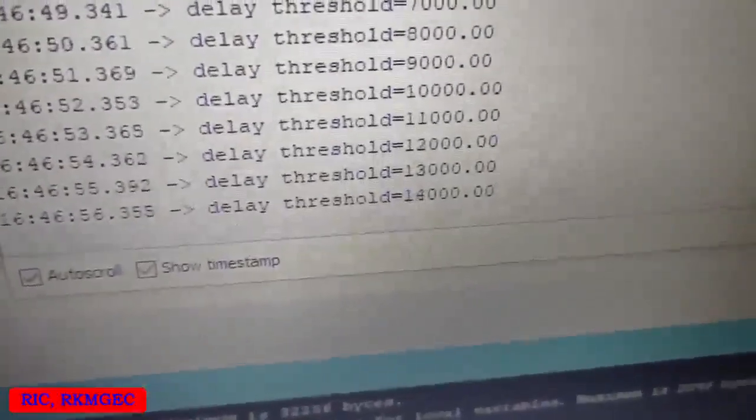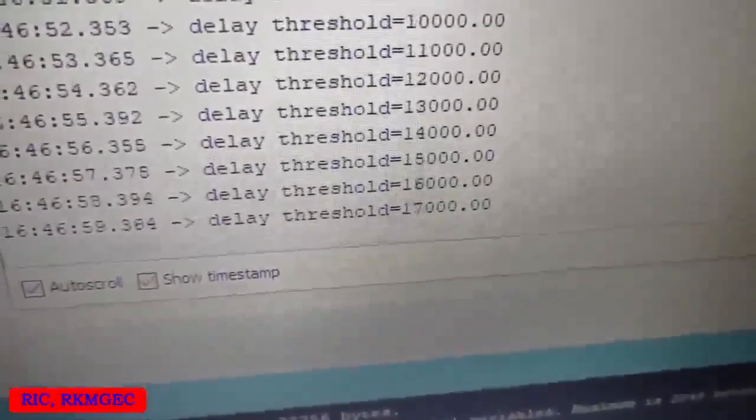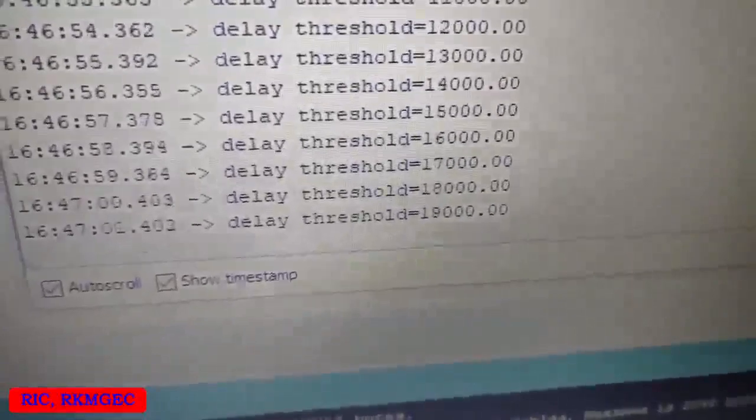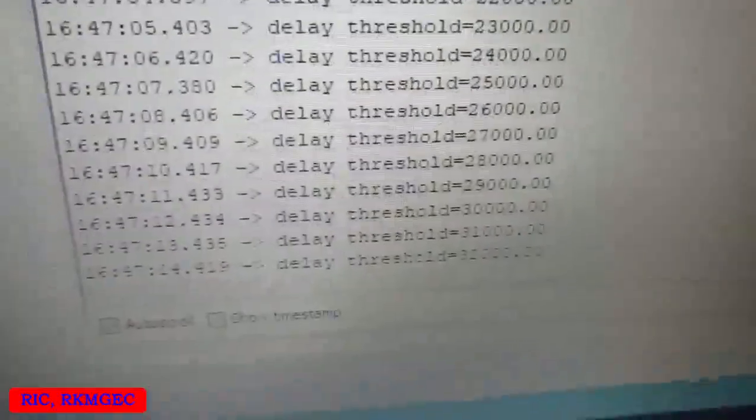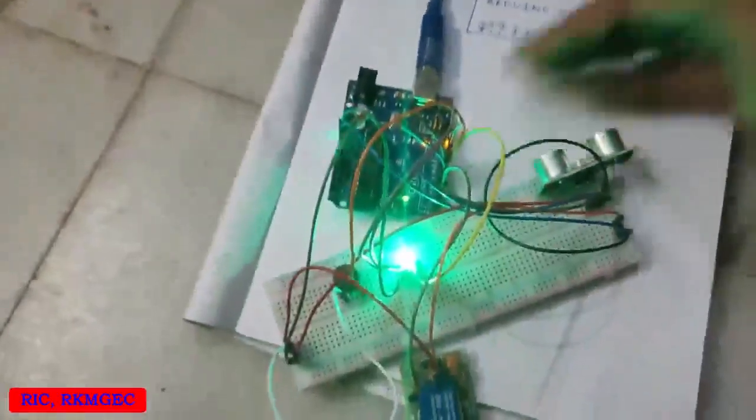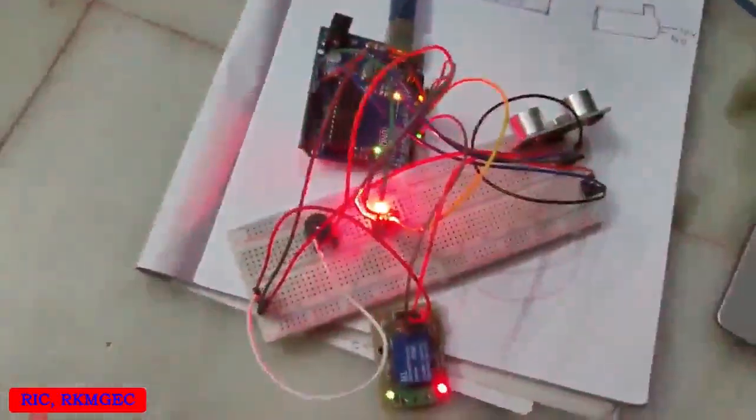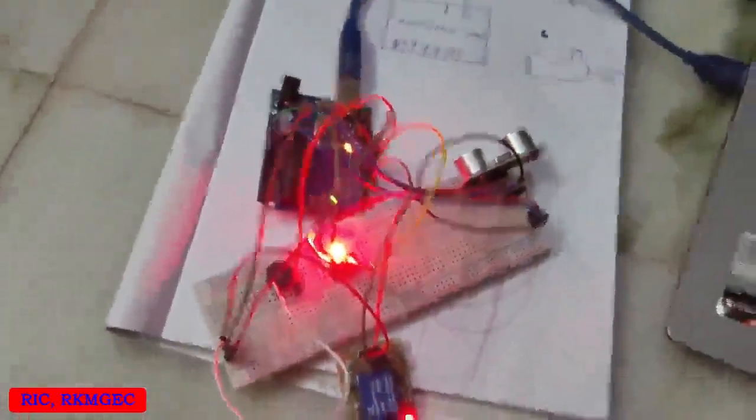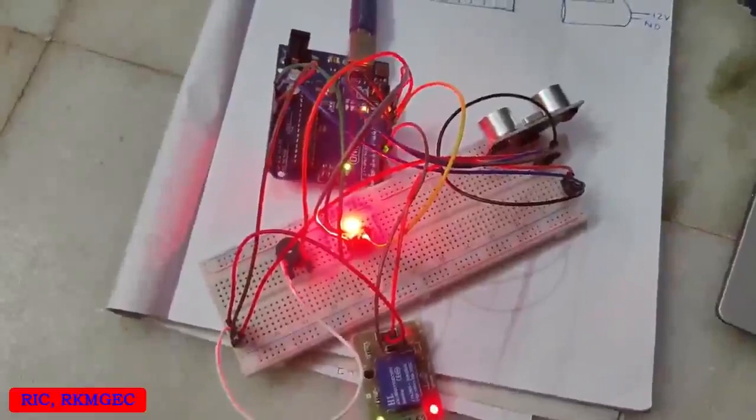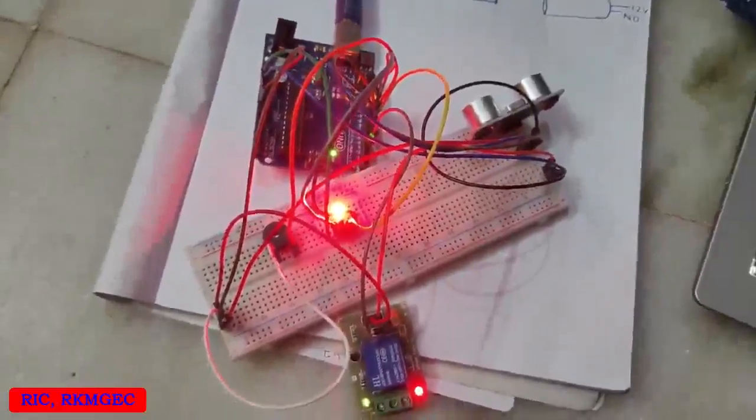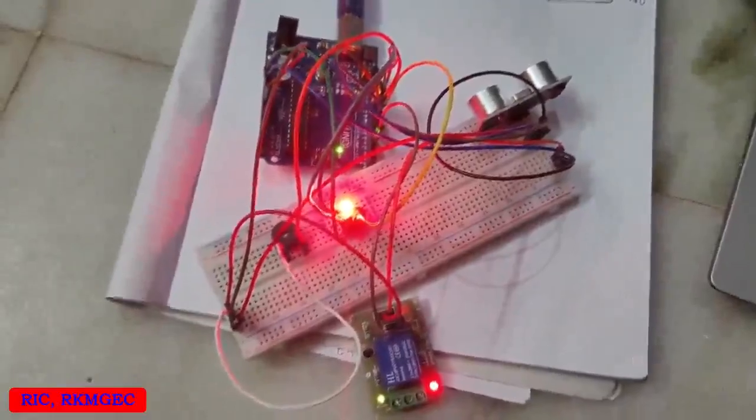Let's take a look at the screen. Delay threshold is increasing: 14, 15, 16, 17 thousand milliseconds. We want to keep it 35. Just remove the hand. It has been set to 35. The buzzer will ring for 35 seconds. Okay, that's it. Thank you for watching.